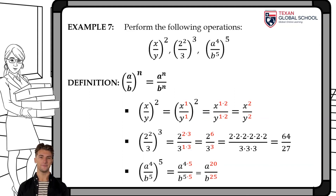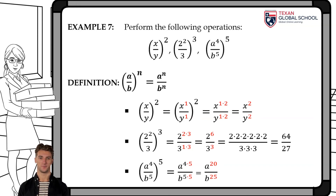Finally, the quotient a to the fourth over b to the fifth, raised entirely to the fifth power. After multiplying exponents, we get a result of a raised to the twentieth power over b to the twenty-fifth power.